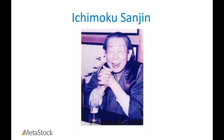His full name is Goichi Hosoda — I'm sure if you speak Japanese you'll correct my pronunciation — but he also went by the pen name Ichimoku Sanju. If you're familiar with Ichimoku, the full name is Ichimoku Kinko Hyo, which means 'one glance equilibrium chart' — essentially an instant look at the balance chart.